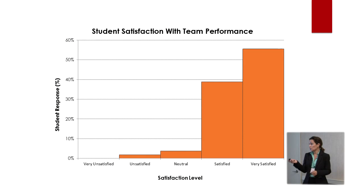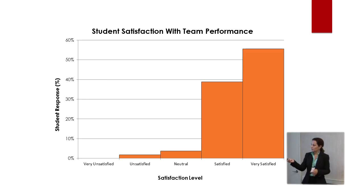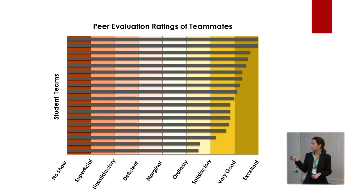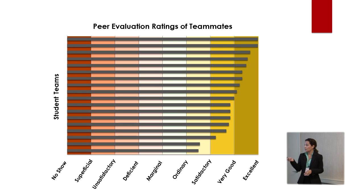Overall with the solar car project, students were very satisfied. We had a little bit of dissatisfaction — maybe one team — but they really had a good time understanding how it was going to work using Kolbe. Looking at the peer evaluations from the solar car project, we had two teams that gave everybody excellence ratings. At the very lowest end we had just some ordinary ratings, but nobody in the marginal range — so everybody was overall really happy with how they worked over the course of the semester.